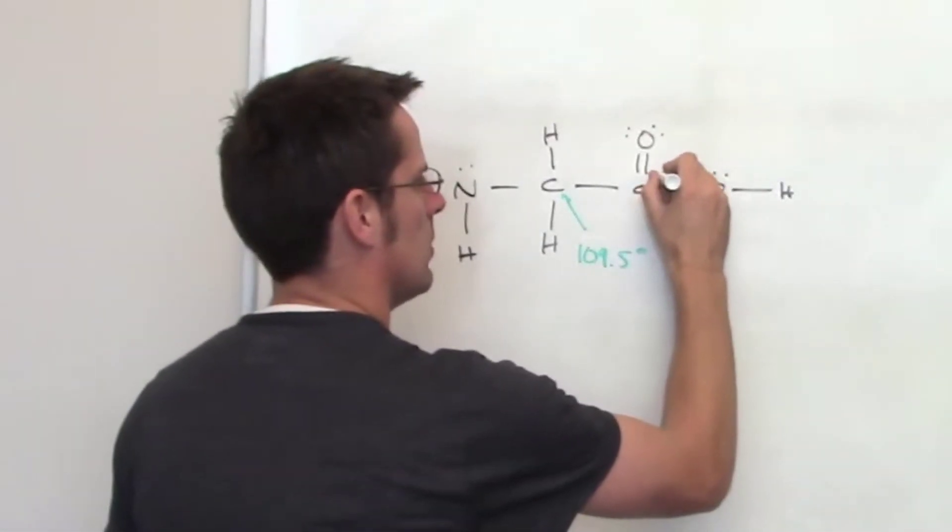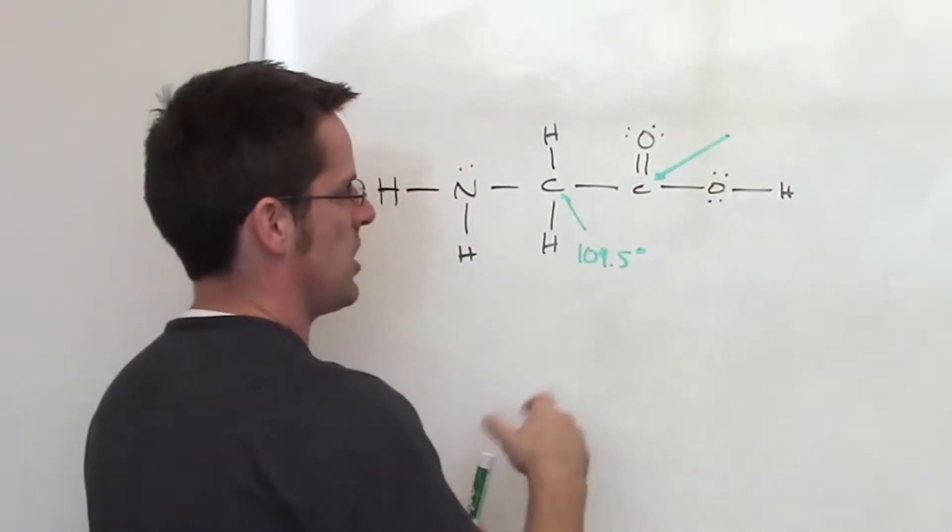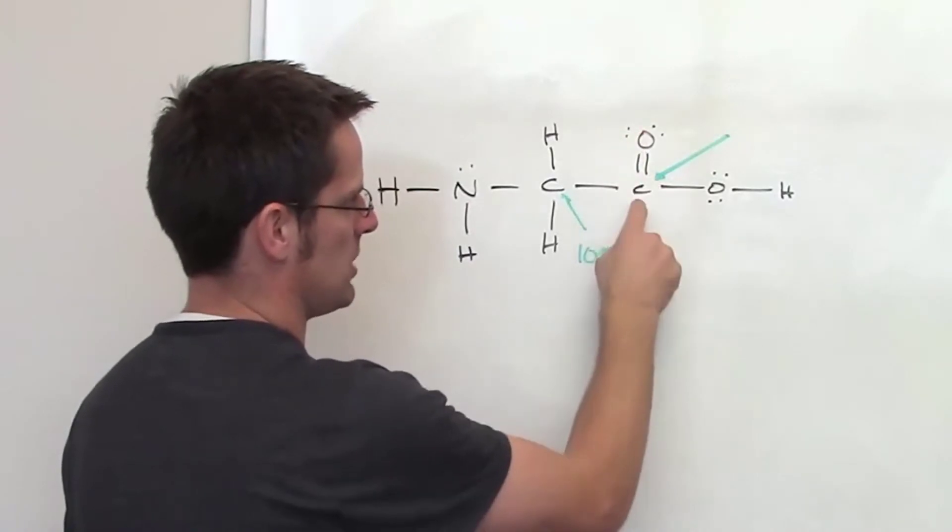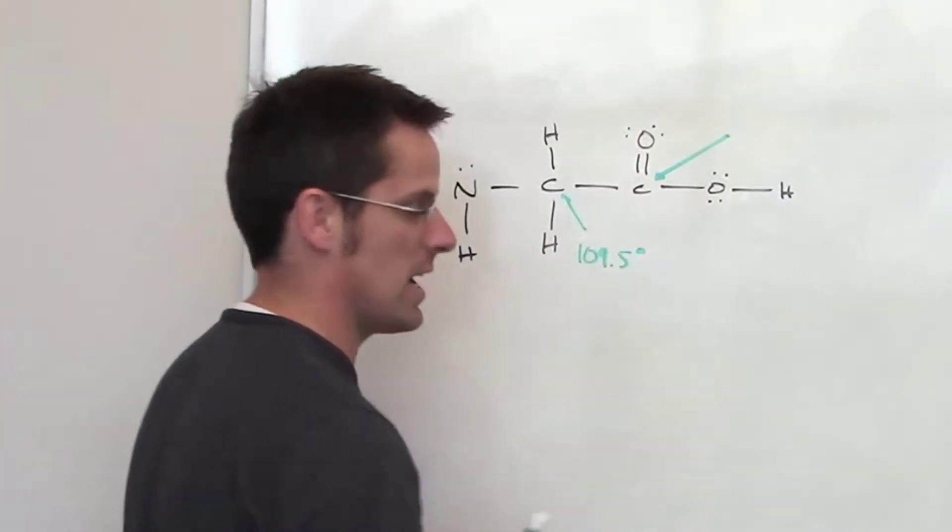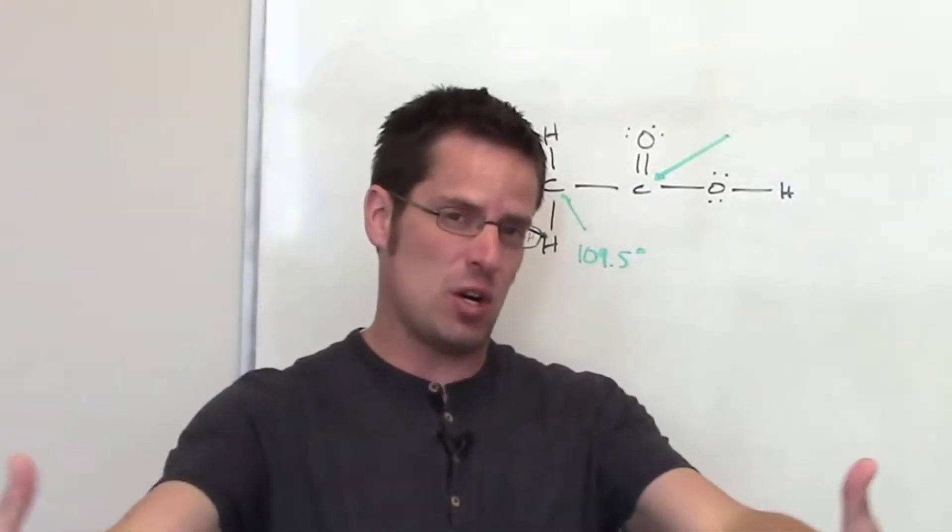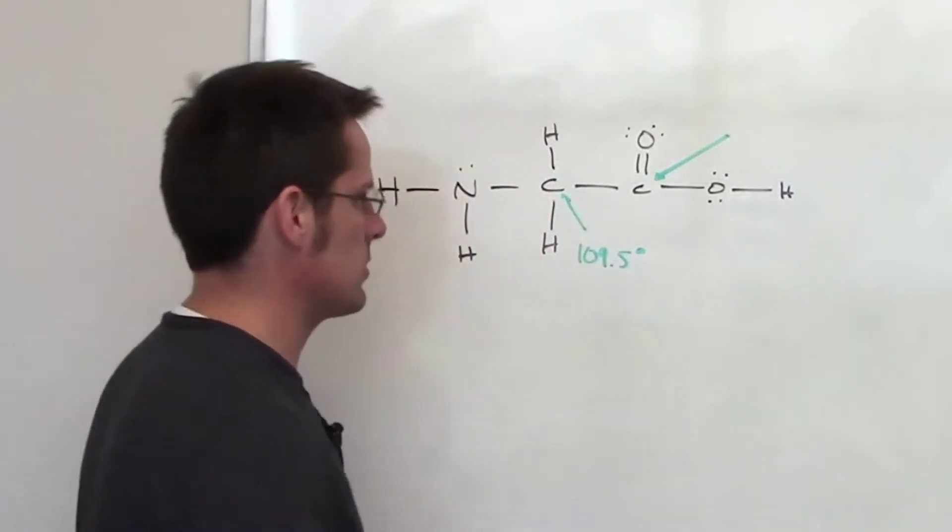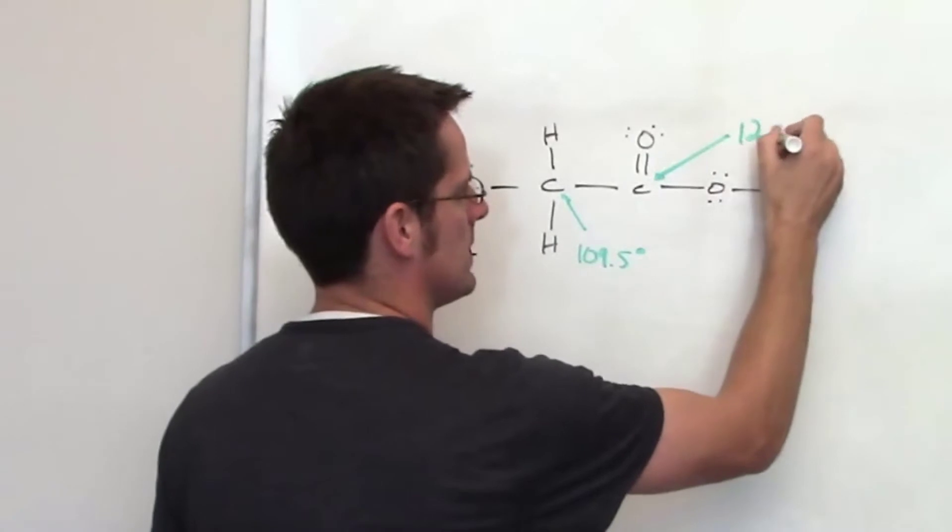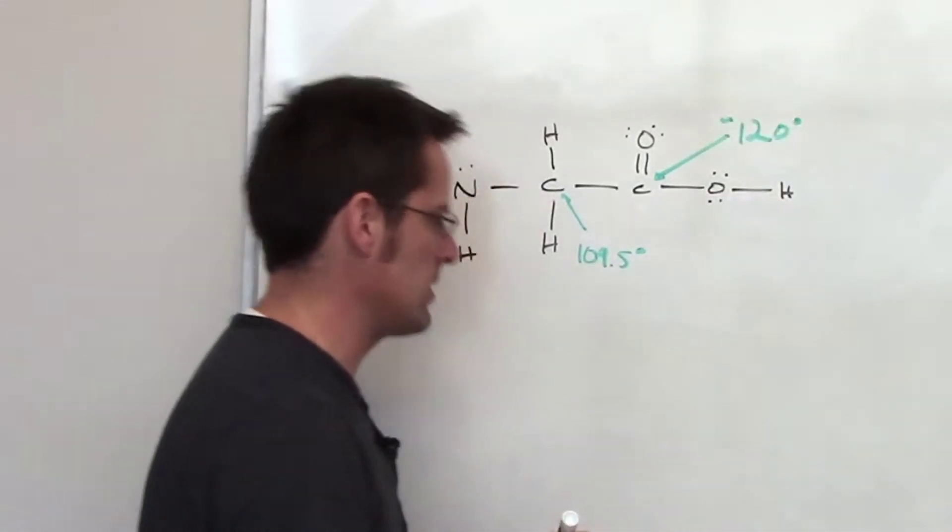about this carbon? Well that carbon has three things around it: oxygen up top, a carbon to the left, and an oxygen to the right. What is the furthest angle apart you could get three things around a central atom? The answer is going to be about 120, so it'll be about 120 degrees around that central carbon atom.